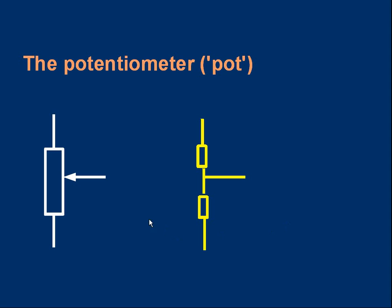So, if we're drawing an electronic circuit, how do we represent a potentiometer? Well, it's the symbol on the left.